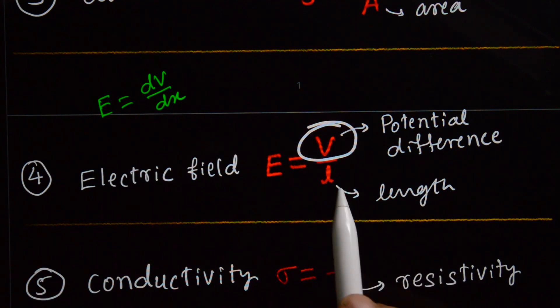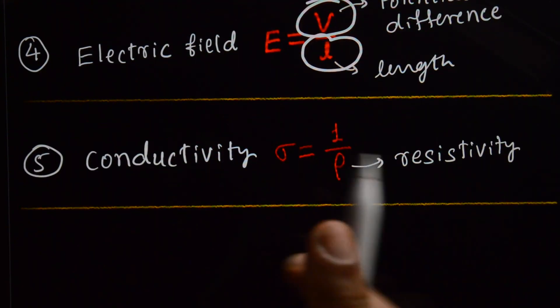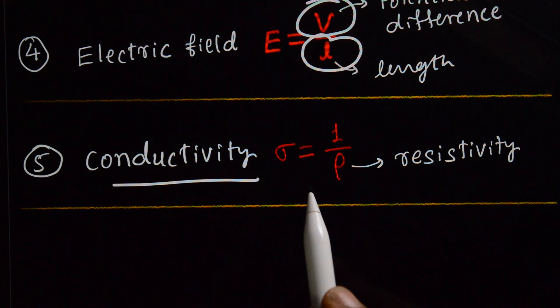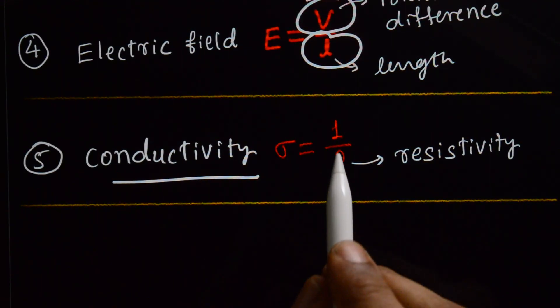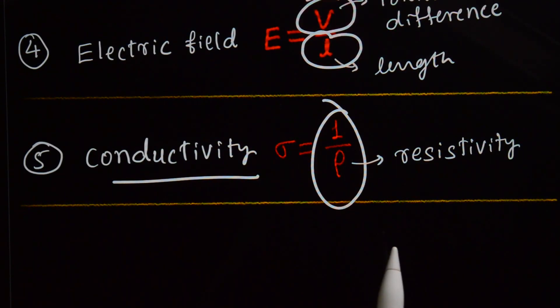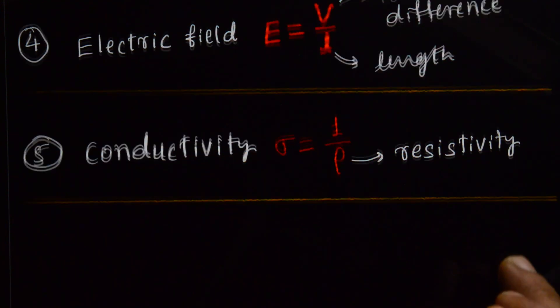V is potential difference, L is length. And conductivity is nothing but a reciprocal of resistivity.